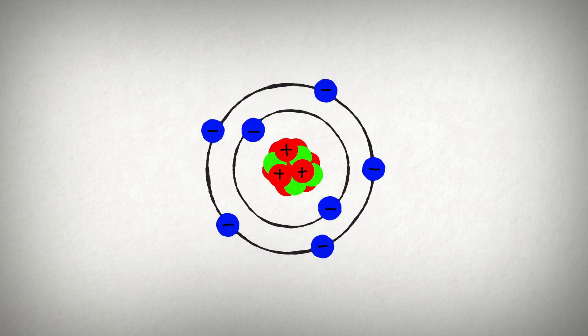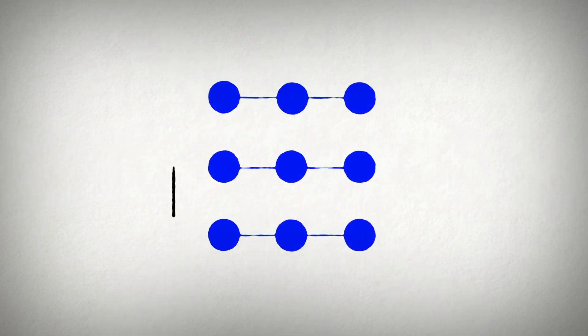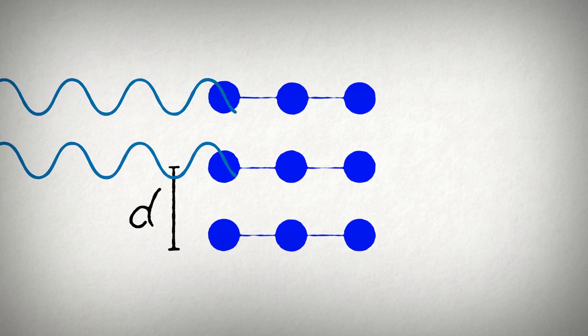In a crystal, the repeating arrangement of atoms, ions, or molecules forms a lattice with well-defined repeating distances.